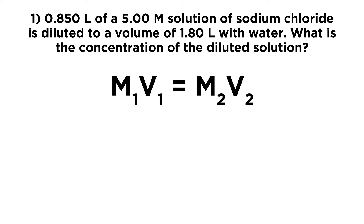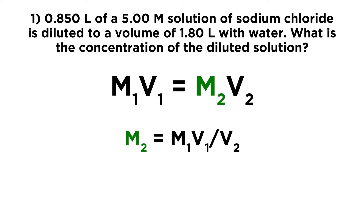So in this particular case, what is it that we're trying to get? We are asked: what is the concentration of the diluted solution? So we had some initial solution, and then we diluted it to get a different solution, and we want to know the concentration of that diluted solution — so we want M2. If we divide both sides by V2, we get M2 equals M1V1 over V2.